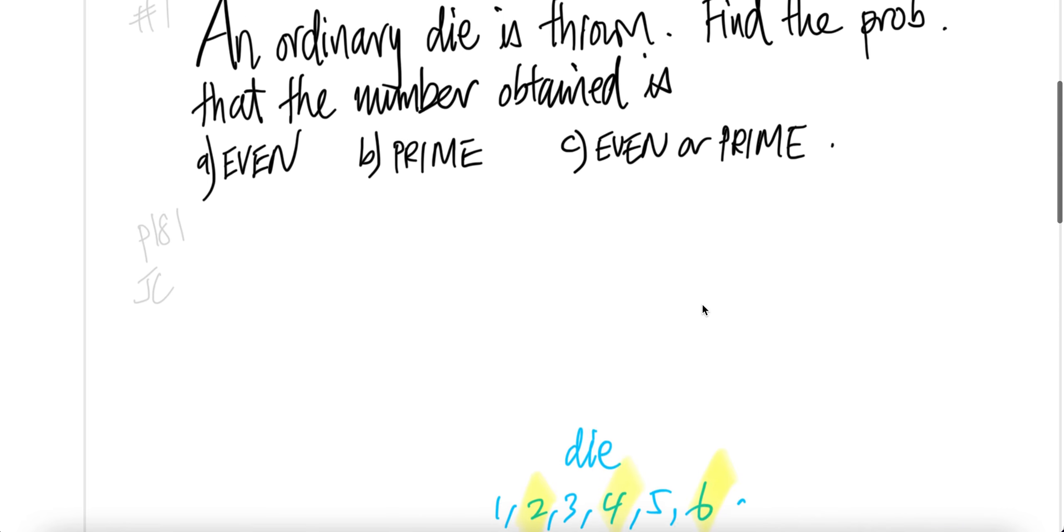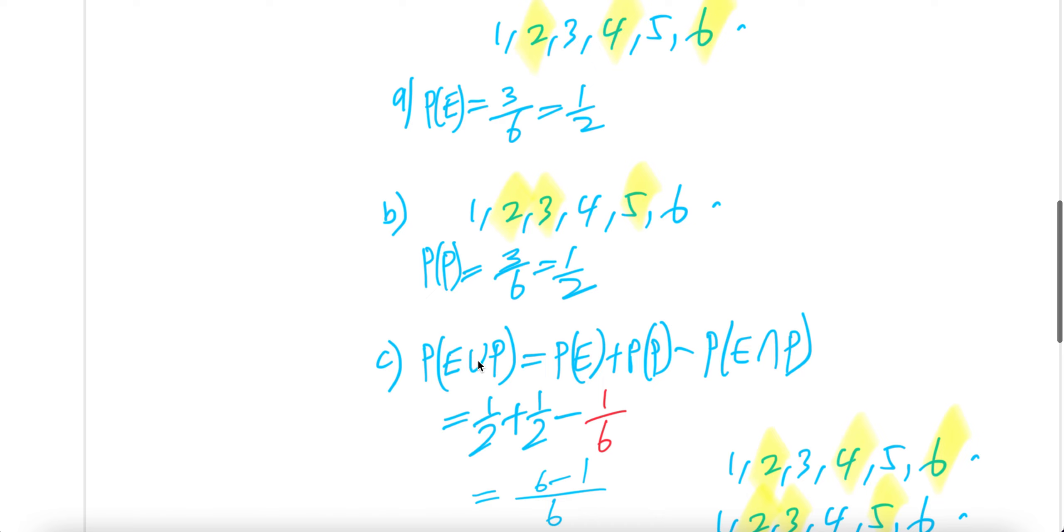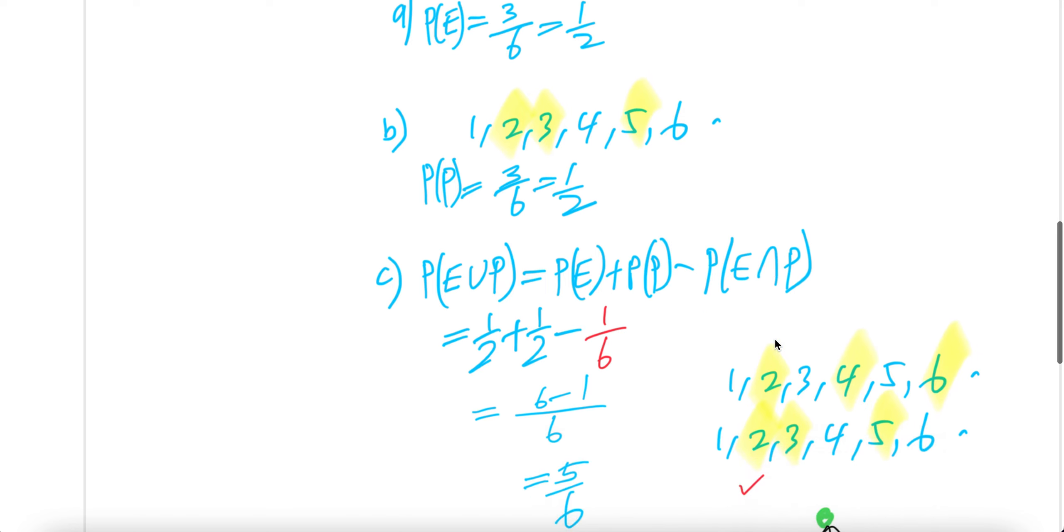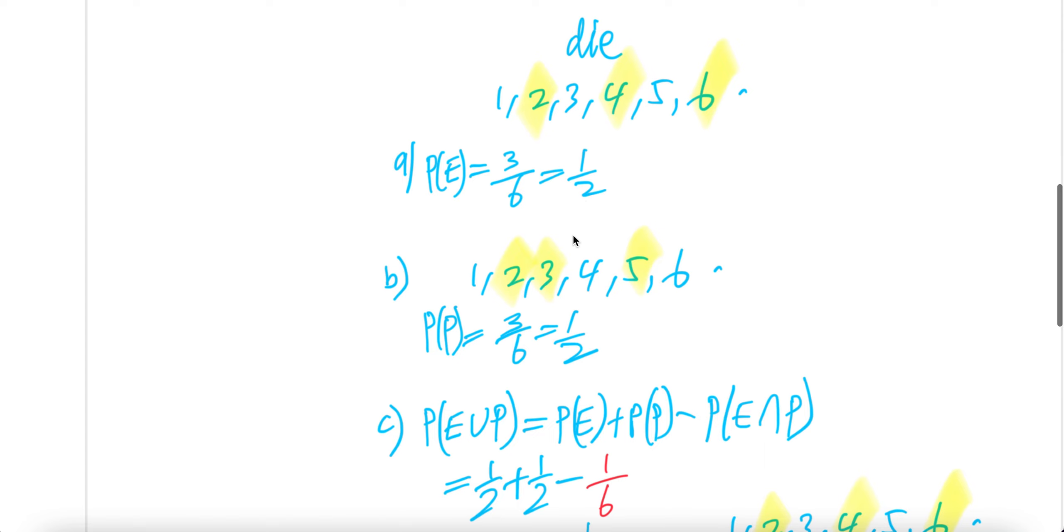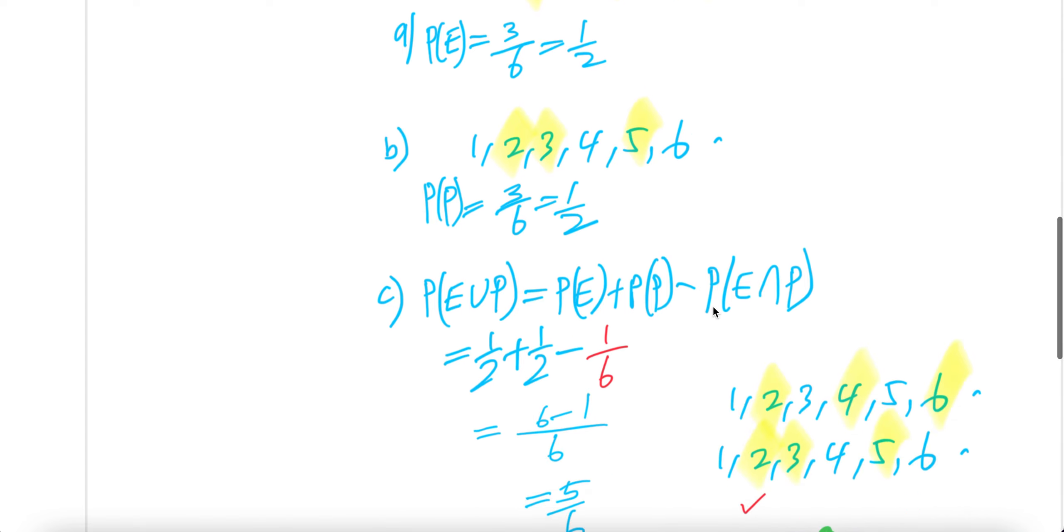Now even or prime. Probability of even union prime is probability even plus probability of prime minus probability of even intersect prime. Probability of even you got is half here. Prime also half here minus probability of even intersect prime.